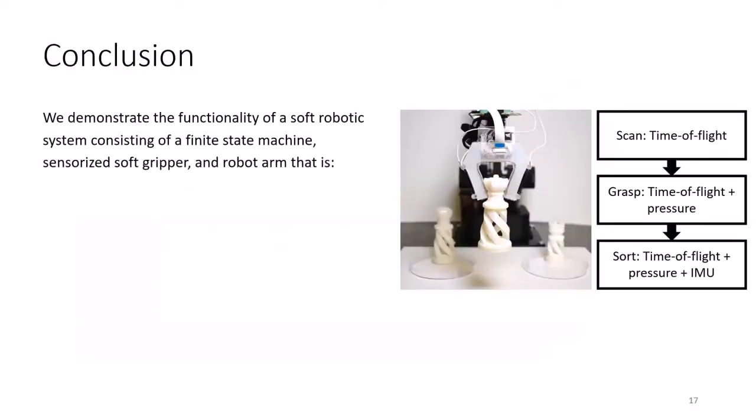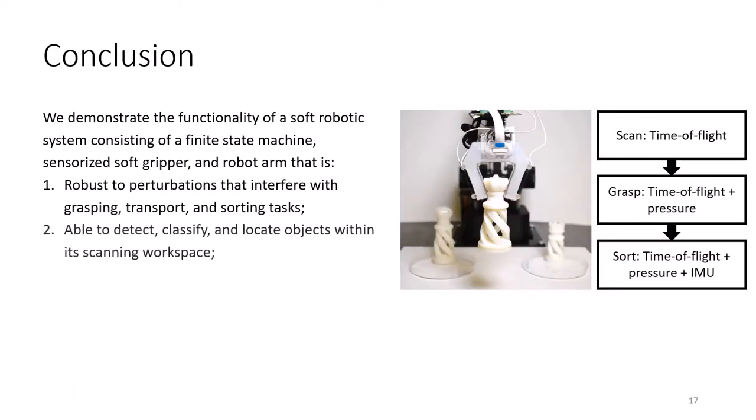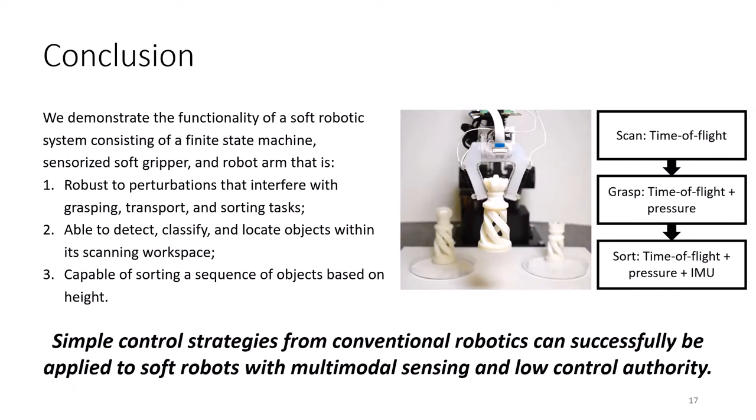In conclusion, we demonstrate the functionality of a soft robotic system consisting of a finite state machine, sensorized soft gripper, and robot arm that is robust to perturbations that interfere with grasping, transport, and sorting tasks. Able to detect, classify, and locate objects within a scanning workspace, and capable of sorting a sequence of objects based on height. To address our research question, we found that simple control strategies from conventional robotics can successfully be applied to soft robots with multimodal sensing and low control authority. This is a simple control strategy that doesn't really rely on the dynamics of the material, as the gripper finger behavior does not matter much between open and close. The gripper was designed to behave this way, and this was key to the success of this control strategy. The multimodal sensors were focused entirely on exteroceptive sensing and could be used with a controller focused solely on high level decisions.